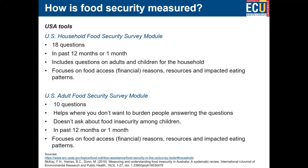So how do we measure food security and food insecurity? The USA has a suite of tools they have been using for a number of years. The most comprehensive is the US Household Food Security Survey Module, which contains 18 questions. It measures food security of the household, usually in a 12-month period, but can be changed to a 30-day reference period. It includes questions on adults and children within the household, but focuses only on the food access reasons for food insecurity.